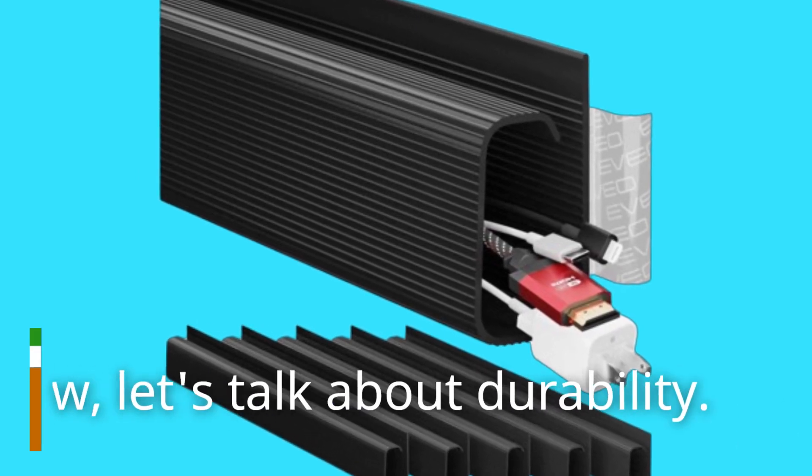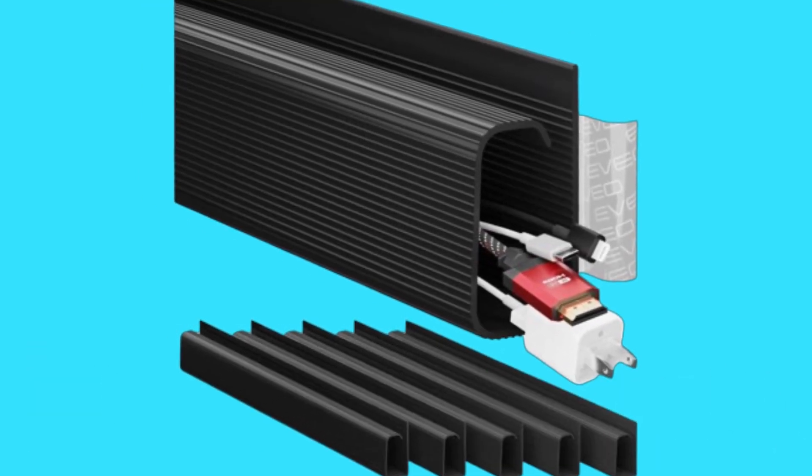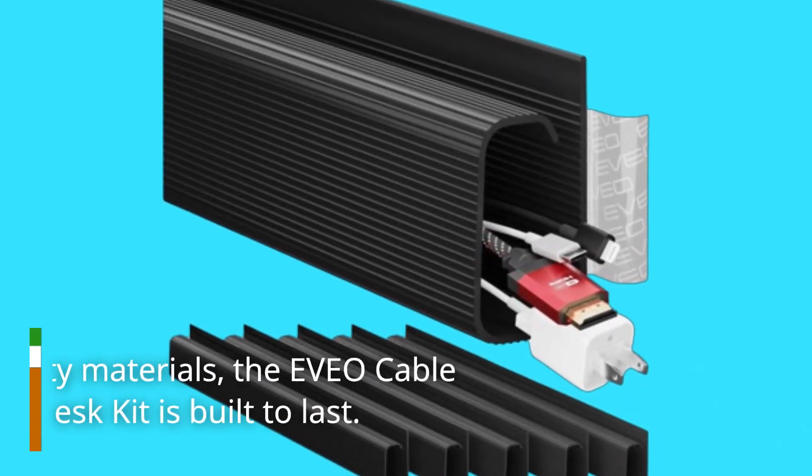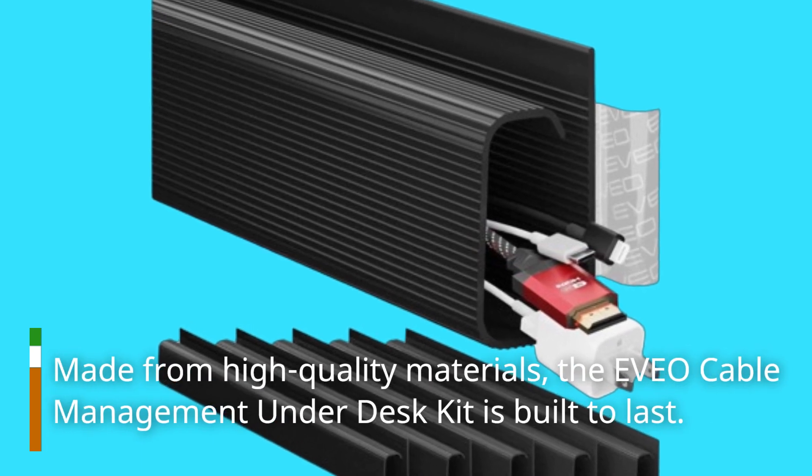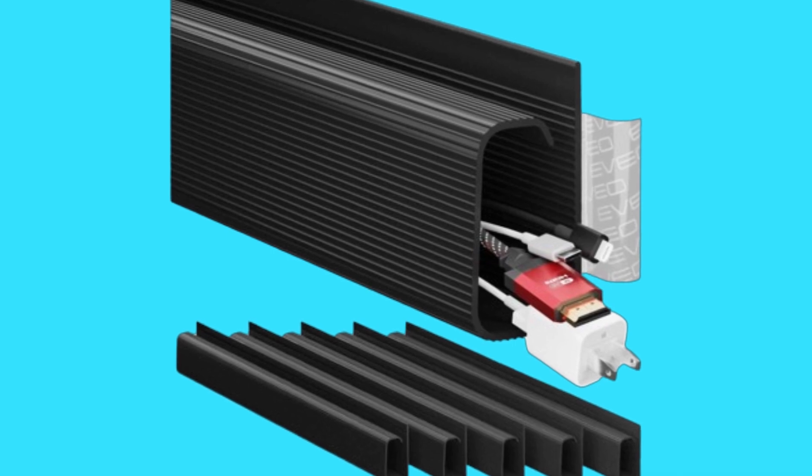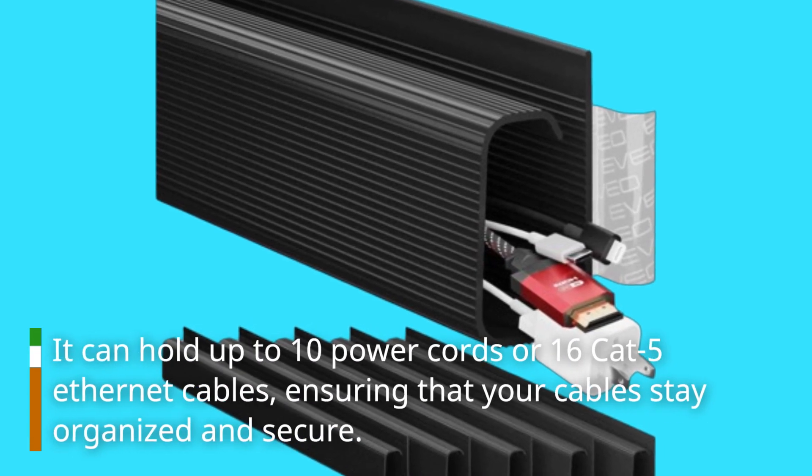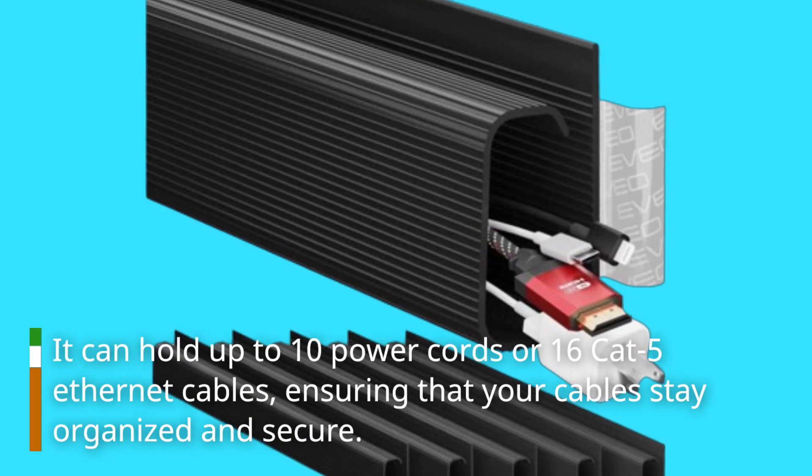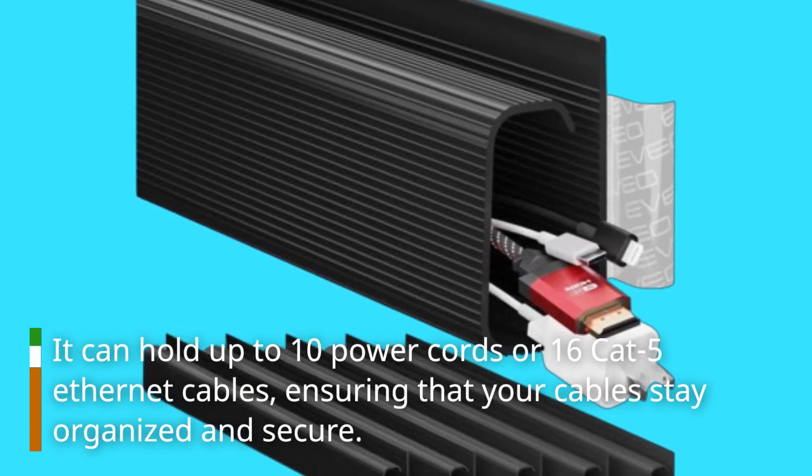Now let's talk about durability. Made from high-quality materials, the EVEO Cable Management Under Desk Kit is built to last. It can hold up to 10 power cords or 16 Cat-5 Ethernet cables, ensuring that your cables stay organized and secure.